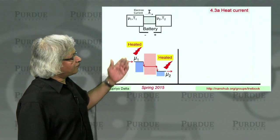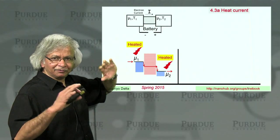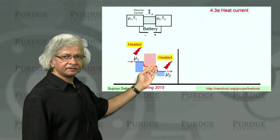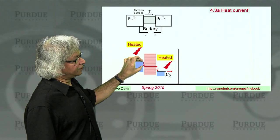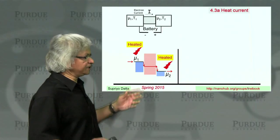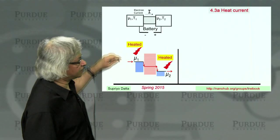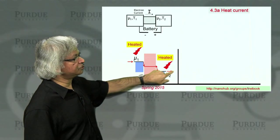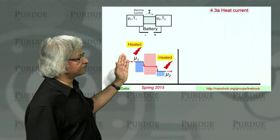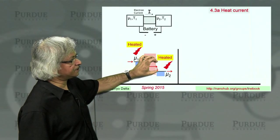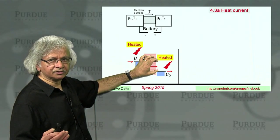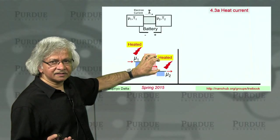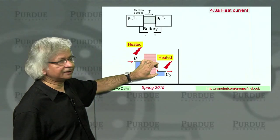So far, whenever we have discussed current flow and used the idea of the elastic resistor, we said that no heat is dissipated in the channel, but where the electron actually loses energy and generates heat is in the two contacts. An electron comes in from the battery at mu 1, exits at mu 2, and goes back to the battery. In the process, it lost that much energy — q times the voltage — dissipated a little bit in this contact and a little bit in that contact.